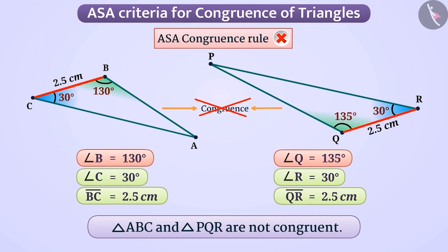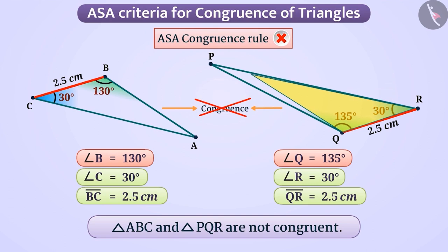Even if we place one triangle over the other, no matter how well adjusted it is, they will not cover each other completely and exactly. This verifies that they are not congruent. By now you must have understood the ASA congruence rule.